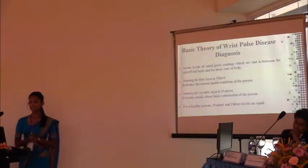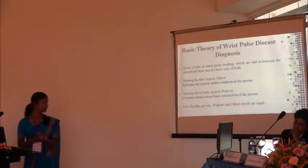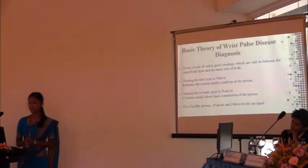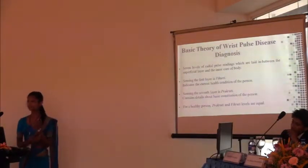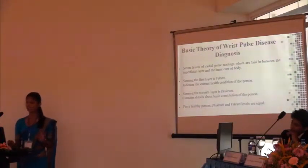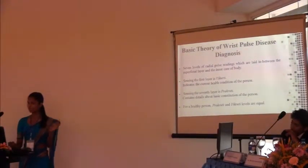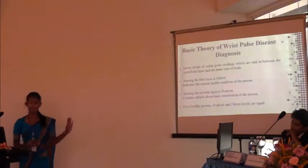The basic theory of Pulse Disease Diagnostics is based on prakurti and vikurthi. There are seven levels of Radial Pulse reading according to Ayurvedic medicine. Sensing the first level is known as vikurthi and it indicates the current situation of the patient. Sensing the deepest level, the seventh level, is known as prakurti and it contains the constitution of the person from the beginning. For a healthy person, prakurti and vikurthi are similar. But for an unhealthy person, the vikurthi is deviated from the prakurti. That is how Ayurvedic practitioners make their diagnostics.